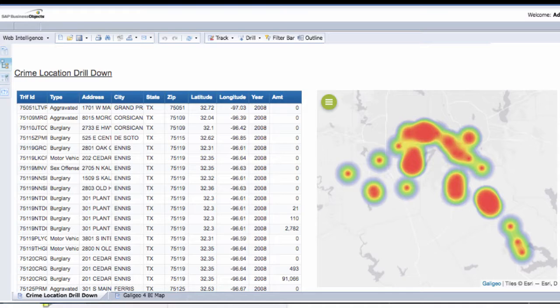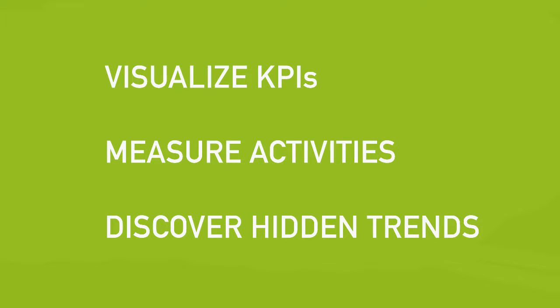By visually examining existing data on a map, you can better identify hidden trends, visualize key performance indicators, measure activities, and gain a better understanding of the competitive landscape.